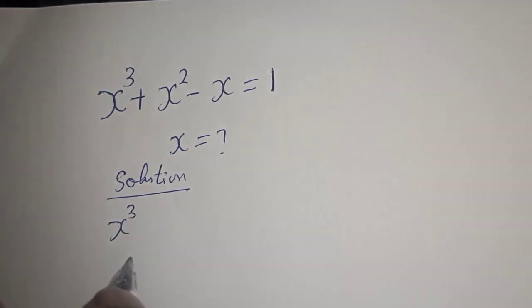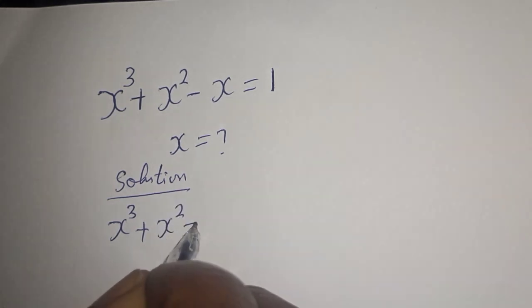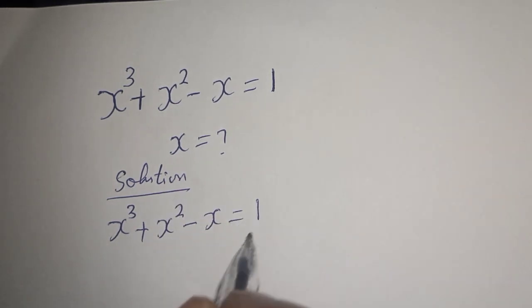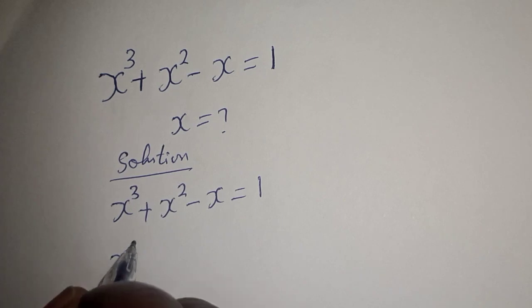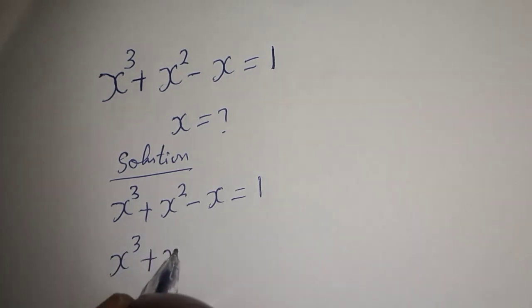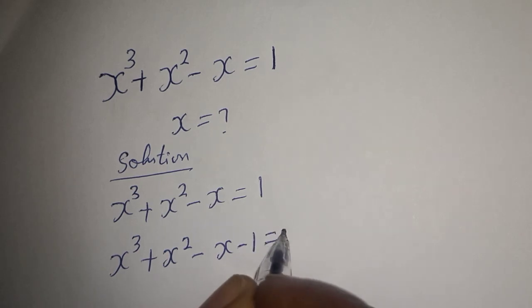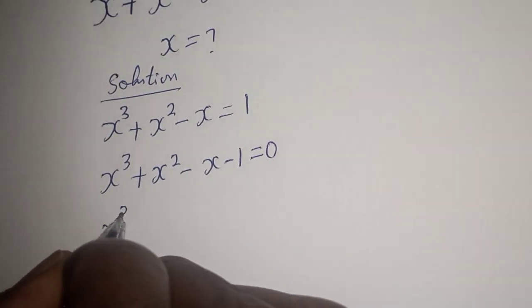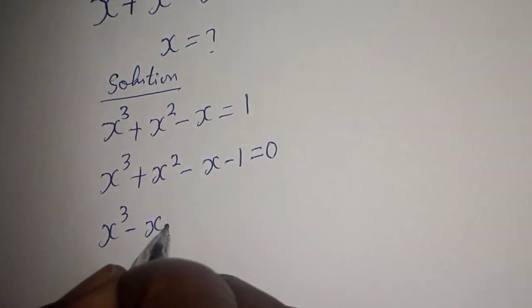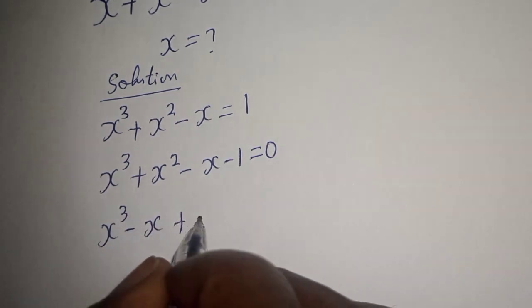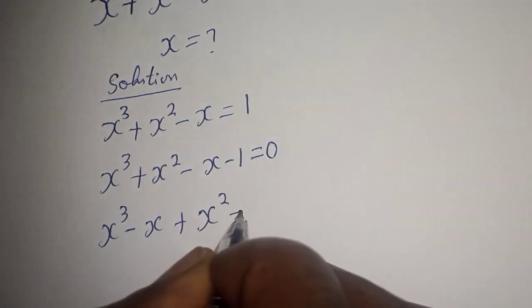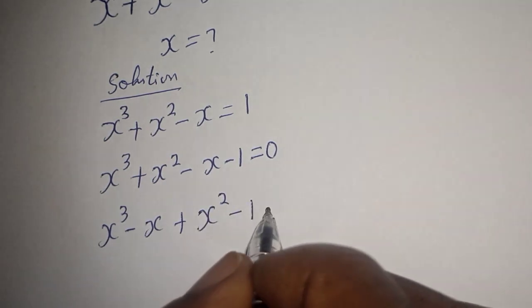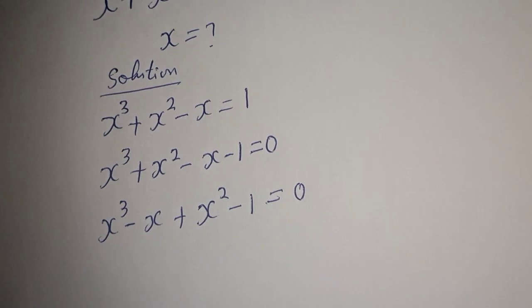s raised to the power 3 plus s square minus s is equal to 1. Then s raised to the power 3 plus s square minus s minus 1 is equal to 0. And this is s raised to the power 3 minus s plus s square minus 1 is equal to 0.